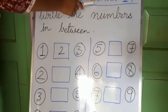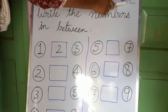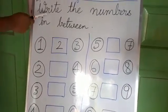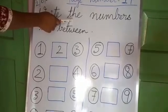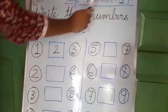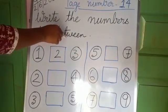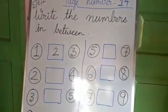Page number 14. Now, we are reading page number 14. What it says? It says write the numbers in between. Write the numbers in between.